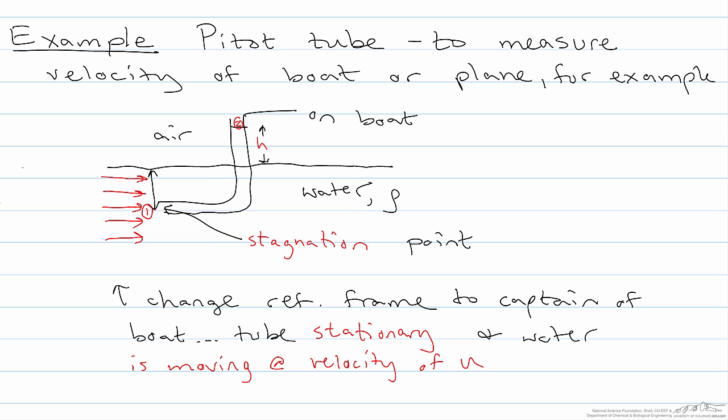Because obviously for the fluid inside this tube to not be moving, the velocity really must be zero right there, but right on the other side of it, the velocity is u, because that's how fast the water is hitting this now stationary column of water.